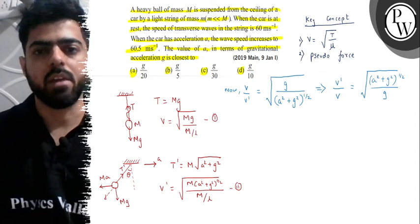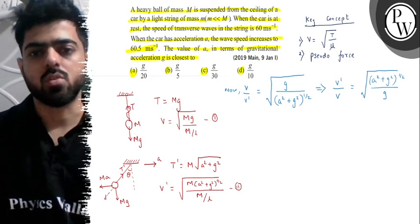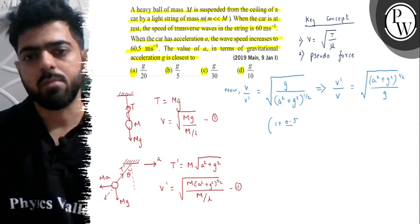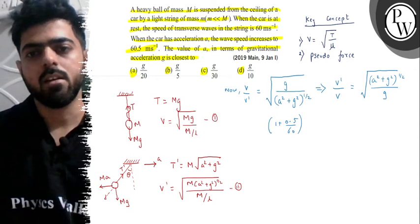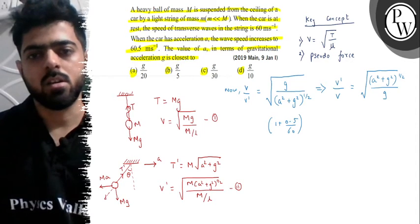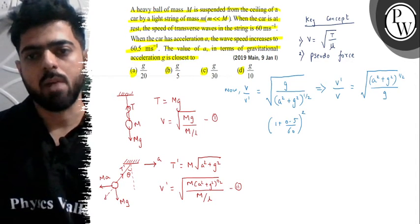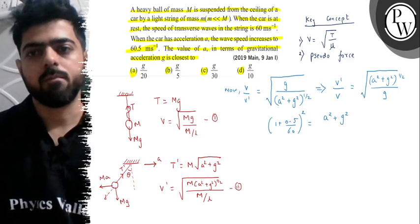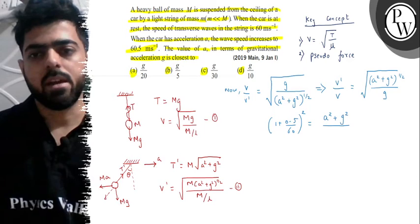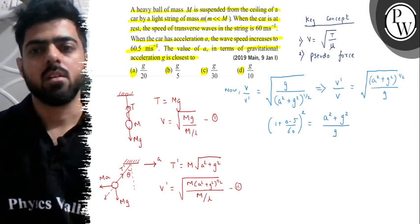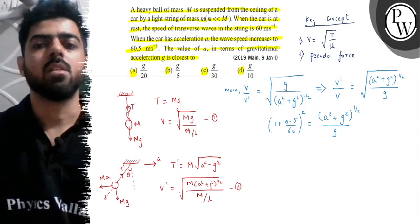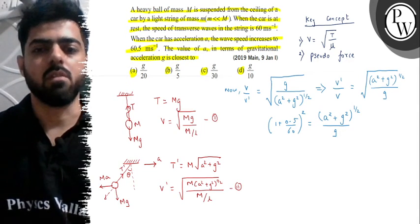V-dash we have 60.5 given, and the lower value is 60. So we can say we can write 1 plus 0.5 by 60. We can split the common denominator. And both sides we will square it. So the term will be a-square plus g-square divided by g-square.